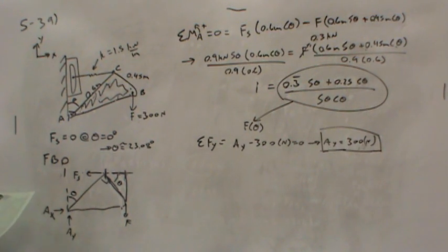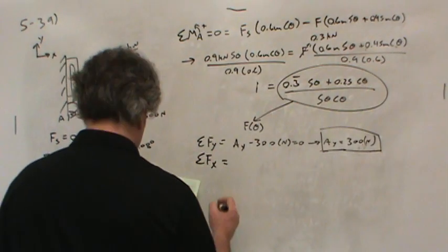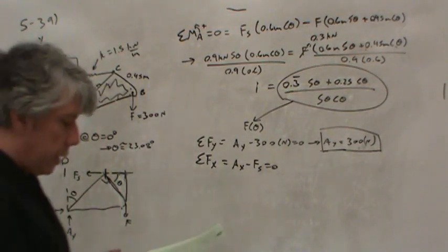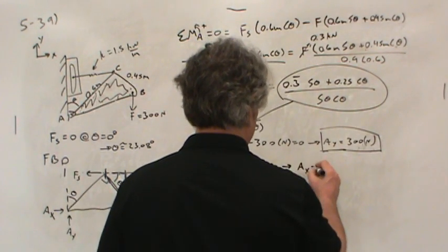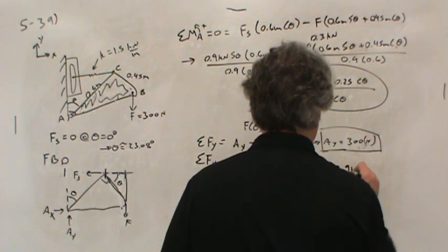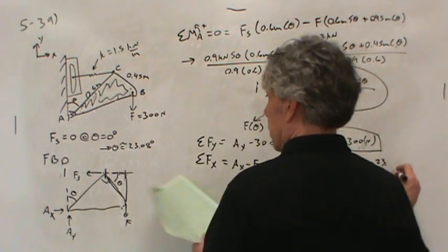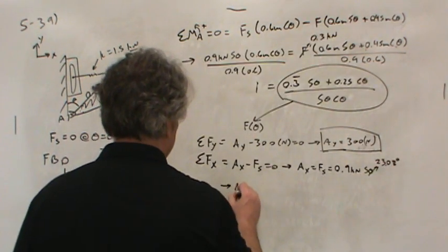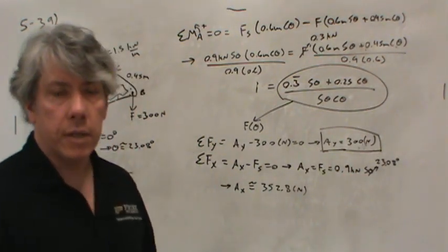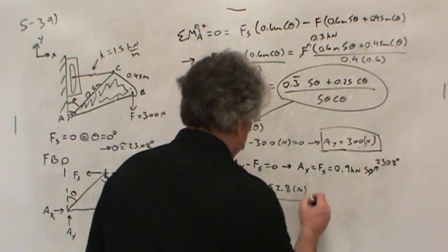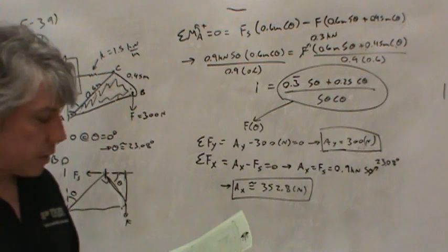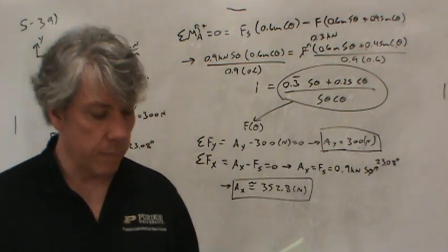And then AX, summing forces in the horizontal direction, I got AX minus the spring force equals 0, because those are the only horizontal forces. So as long as I know the spring force, I can calculate AX. And now that I know the angle theta, I can actually calculate the force in the spring. It was 0.9 kilonewtons times sine theta. But theta is 23.08 degrees or so. And so, I got AX equal to about 352.8 newtons. I know I've got kilonewtons here. It was really 0.3528 kilonewtons, but I changed that to newtons when I wrote down my results. All you've got to do is move the decimal place 3 over. The prefixes are really easy once you realize it's just moving the decimal place 3 over.